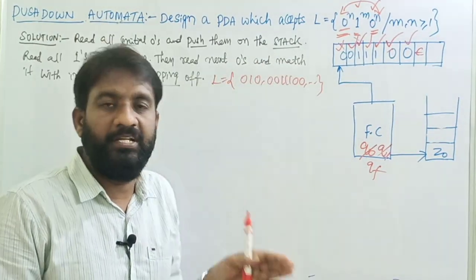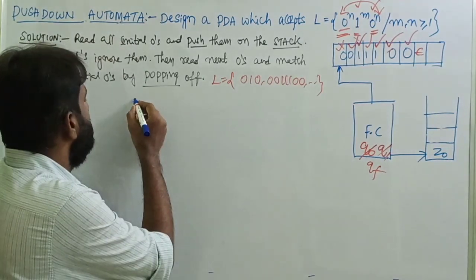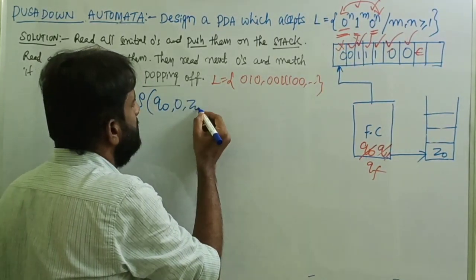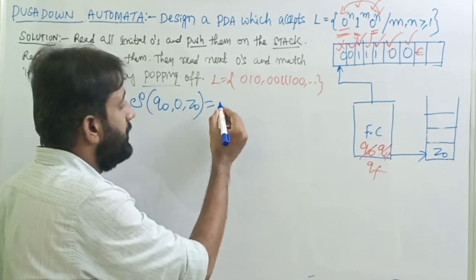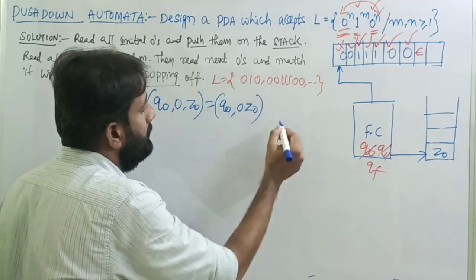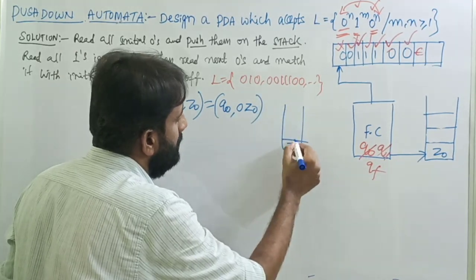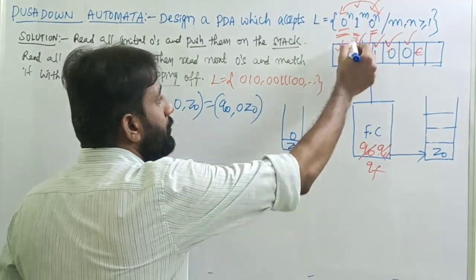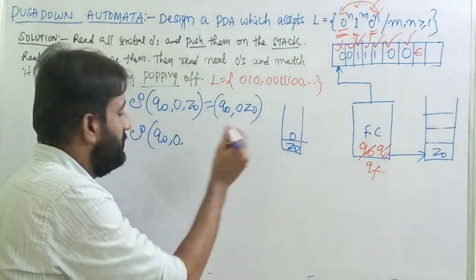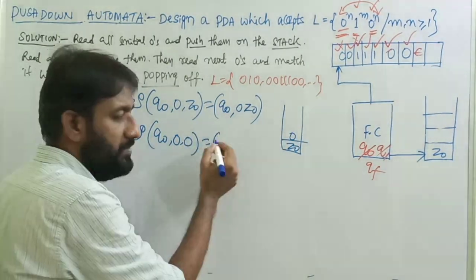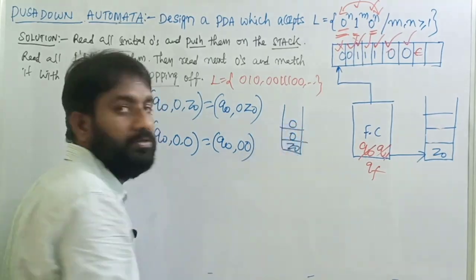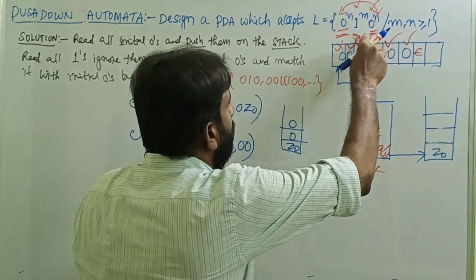Let's write the first two transitions. Transition of q0: first input symbol is 0, top of the stack is Z-naught — add 0 onto the stack and remain on the same state. Stack looks like: Z-naught, 0. Then read next 0 with top of stack being 0 — remain on the same state, add 0 onto the stack: transition q0, 0, 0 → q0, 0, 0.